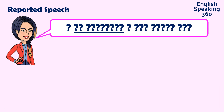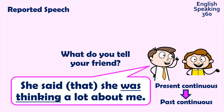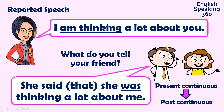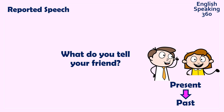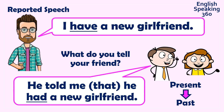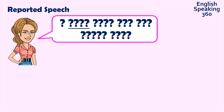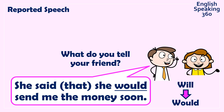Practice: 'I am thinking a lot about you.' What do you tell your friend? She said she was thinking a lot about me. Don't forget that you have to change 'you' to 'me,' because 'you' was the listener when she said it. Next: 'I have a new girlfriend.' He told me he had a new girlfriend. And: 'I will send you the money soon.' She said she would send me the money soon.